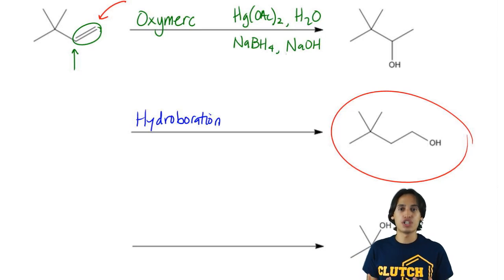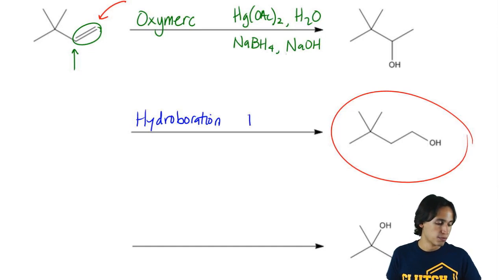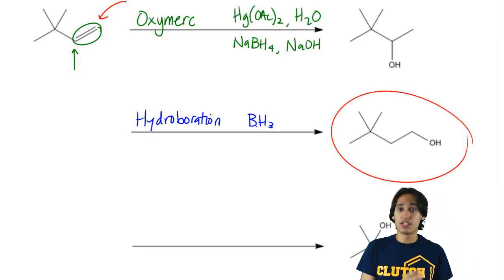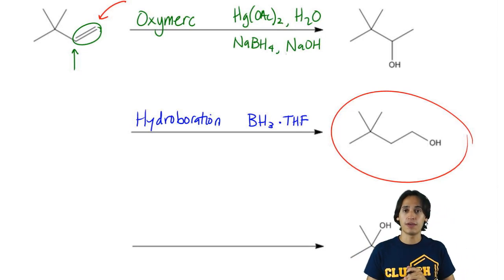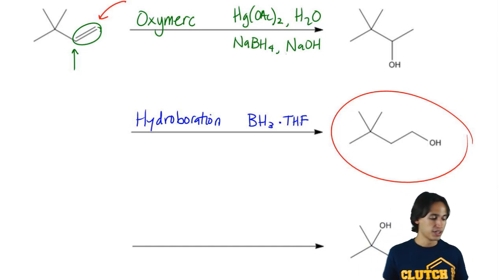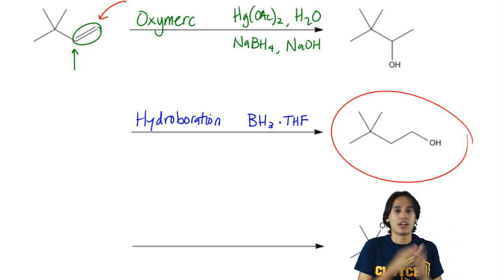So let's just go ahead and remember what the reagents were. Hydroboration means that you need boron in there and it was really going to be any boron source, most commonly BH3, but your professor, your textbook may use a different source of boron. There's all kinds of different sources that we can use and BH3 many times will be complexed to THF, but sometimes THF is a solvent, so it's not absolutely required that you write that.